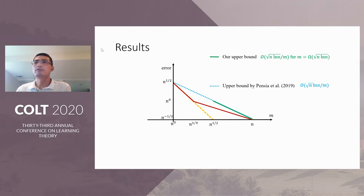Our results consist of an upper bound and a lower bound. Our upper bound achieves an error rate of square root N log N divided by M, the number of good points, when M is larger than square root N log N.